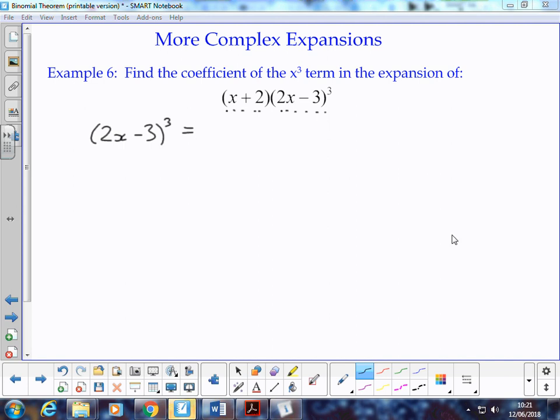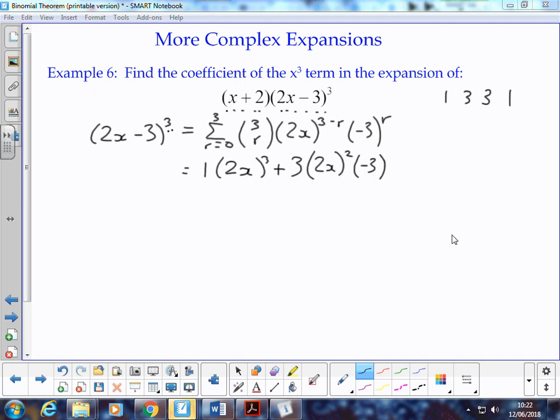we can think of that as we're doing our binomial expansion from r equals 0 to 3 of 3 choose r times 2x to the power 3 minus r times negative 3 to the power r. So if we were to expand that fully, row 3 starts with 1, 3, so it's going to be 1, 3, 3, 1, which means that we're dealing with 1 multiplied by 2x to the power 3 plus 3 lots of 2x to the power 2 times 1 lot of negative 3 plus 3 lots of 2x times negative 3 squared plus 1 lot of negative 3 cubed.